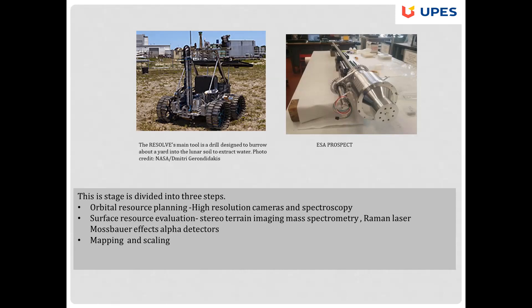Using a neutron spectrometer at lower altitudes gives clear maps of possible water locations on Mars. High-resolution imaging helps with indirect landing in polar shaded regions. Surface resource evaluation is done using stereo terrain imaging, mass spectroscopy, Raman laser spectroscopy, Mössbauer effect, and alpha particle detector. It gives depth analysis about minerals and helps decide mining techniques. NASA's RESOLVE tool and ESA's PROSPECT instrument help understand the depth profile of water volatiles. Mapping and scaling are useful for easy navigation and transportation of resources.